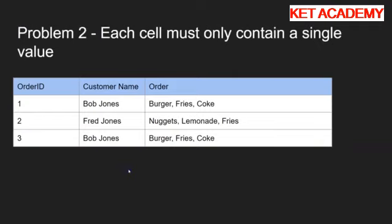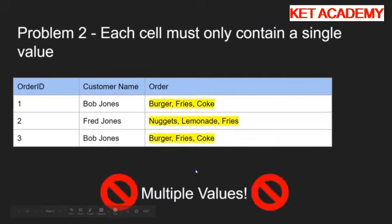Second part: each cell must only contain a single value. As you can see here, this cell doesn't contain a single value - it contains three items: a burger, fries, and coke. In fact, all of them do. So that's no good. What we need to do is move those into a separate table so that each row only has one item.